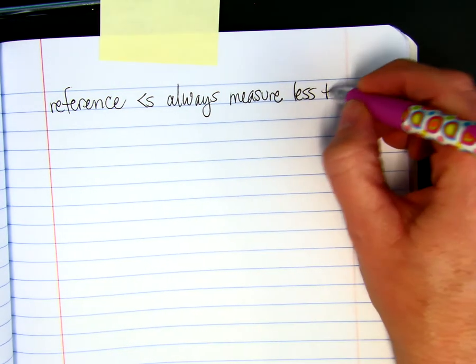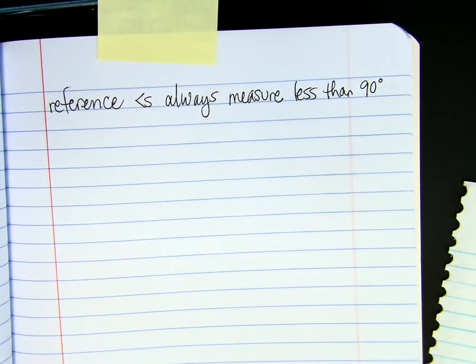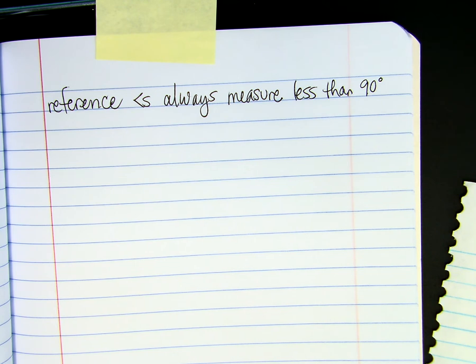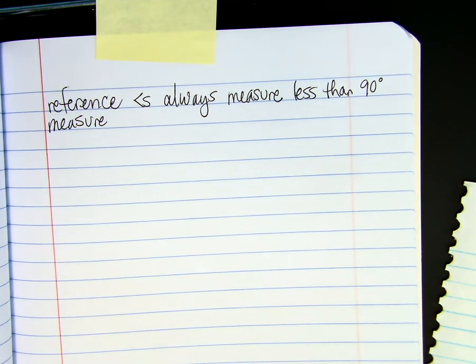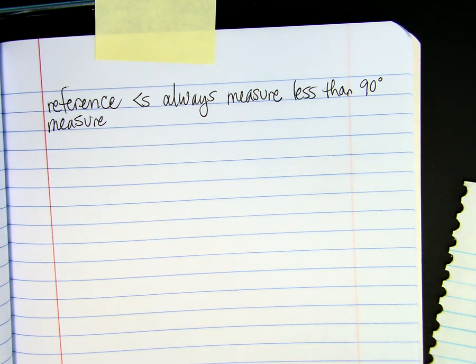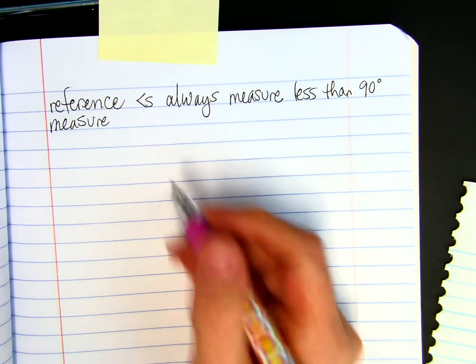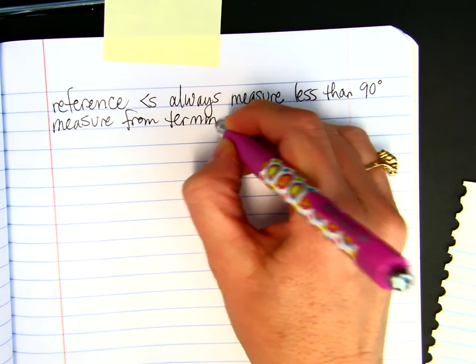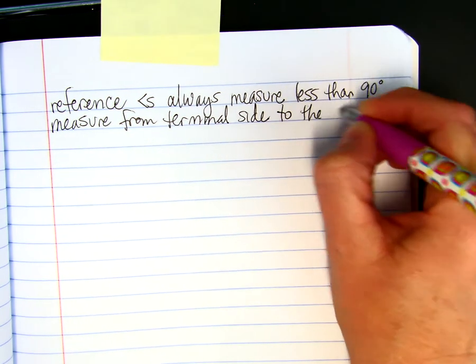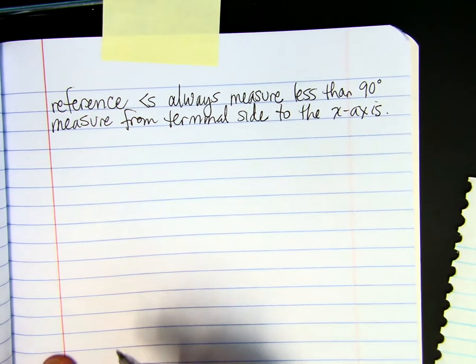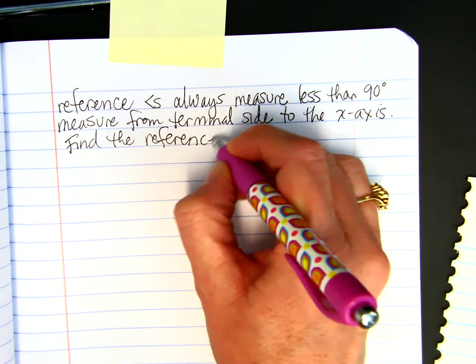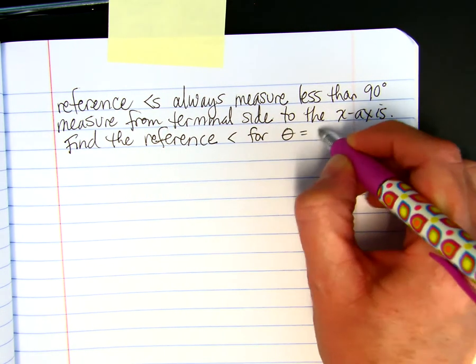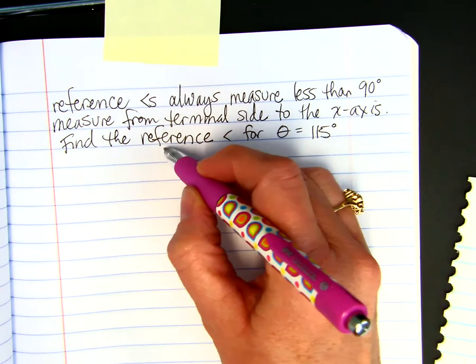Reference angles always measure less than 90 degrees. So in other words, they're going to be in the first quadrant. Never mind. It's not always the first quadrant. Don't listen to that part. But this is what it is. It's just how far away is the angle from the X axis. How far away from the X axis. So that would be your reference angle. You measure from the terminal side to the X axis. I think it will be a lot easier with an example. Find the reference angle for theta equals 115 degrees.